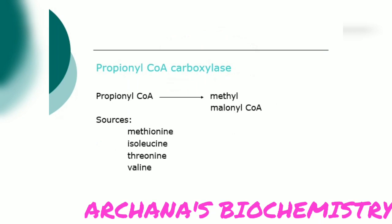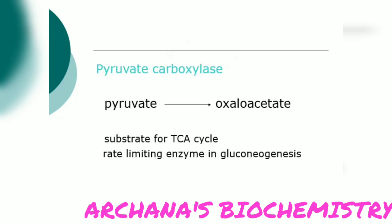Propionyl-CoA is converted to methylmalonyl-CoA by propionyl-CoA carboxylase, which again requires biotin. Next, pyruvate carboxylase converts pyruvate to oxaloacetate — this is also a biotin-dependent reaction. Oxaloacetate is a substrate for the TCA cycle and is also the rate-limiting step for gluconeogenesis, the reversal of glycolysis. The last step of glycolysis is formation of pyruvate, and pyruvate is then converted to oxaloacetate in gluconeogenesis.